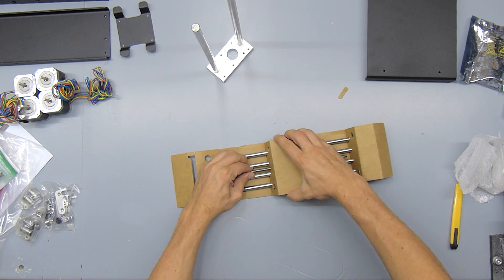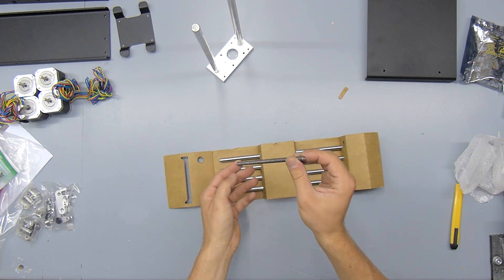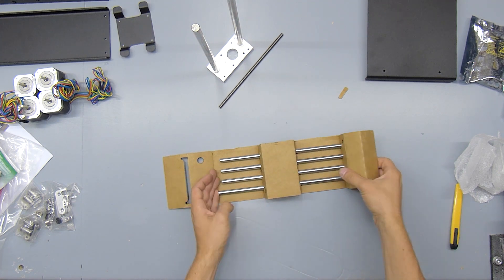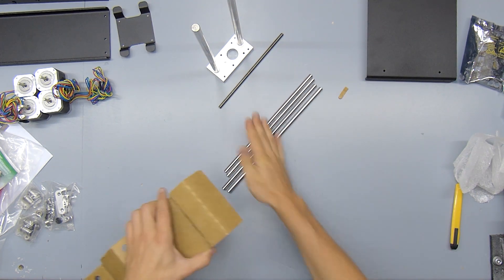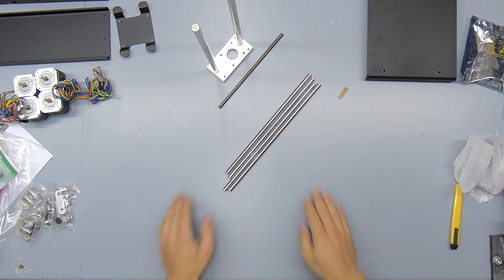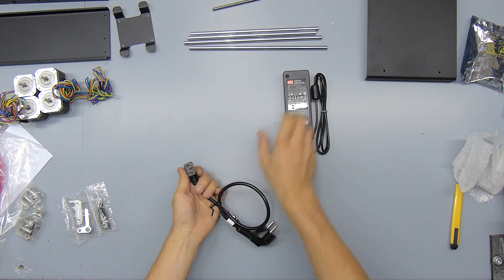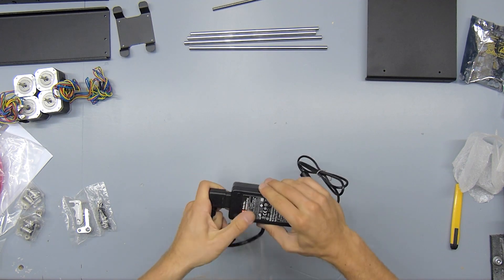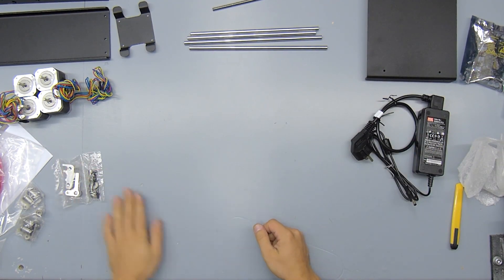Then we have the ACME lead screw for the Z-axis and the linear rails for X and Y. And again, these are also pretty nice quality. Let's get that in here. So that's a really nice tight fit, so nothing going to come loose there.